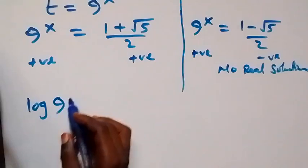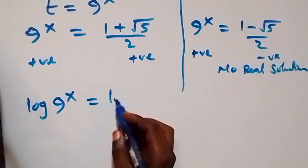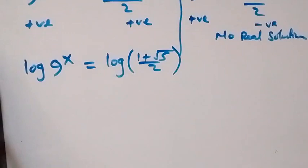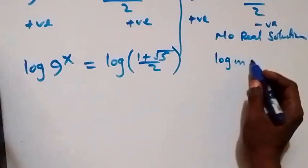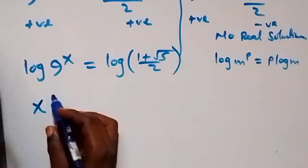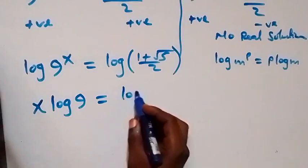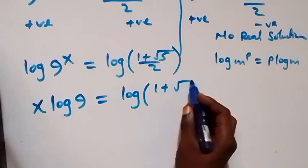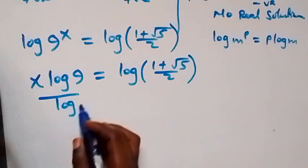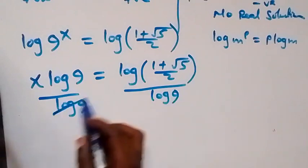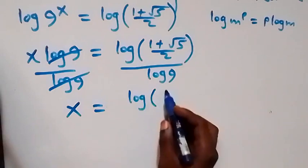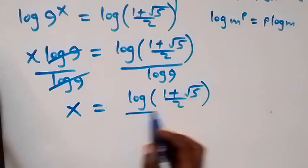We work with the positive result and take the log on both sides: log of 9 raised to power x equals log of 1 plus root 5 over 2. Applying the power law of logarithms, log m raised to power p equals p log m, this becomes x log 9 equals log of 1 plus root 5 over 2. Dividing both sides by log 9, we get x equals log of 1 plus root 5 over 2, divided by log 9.